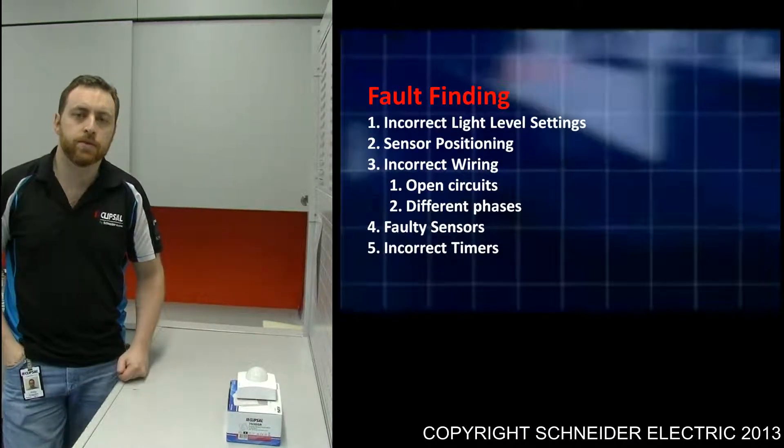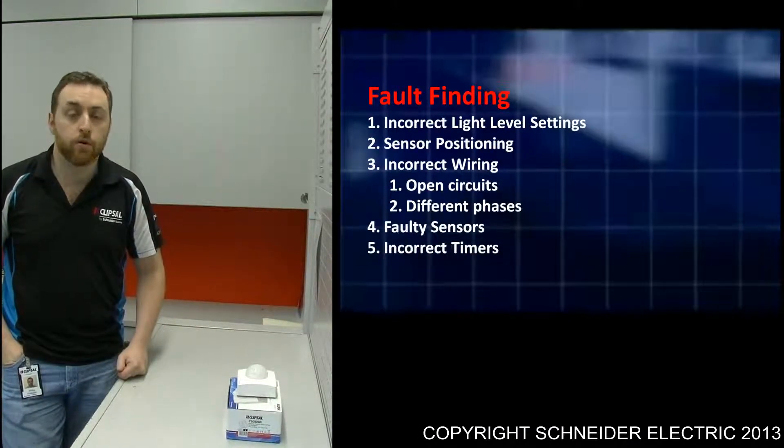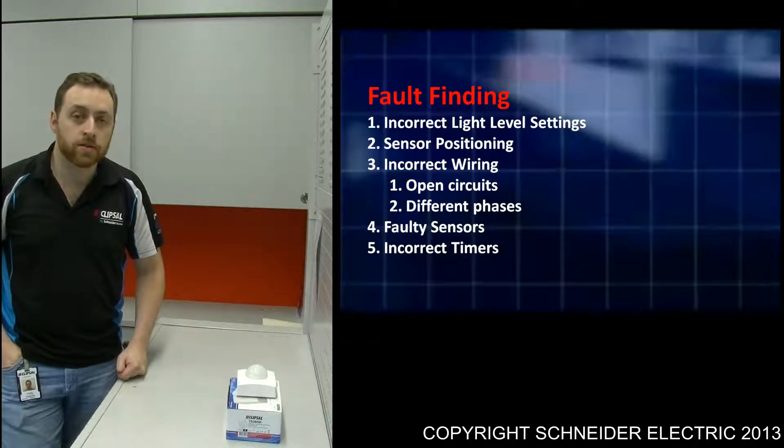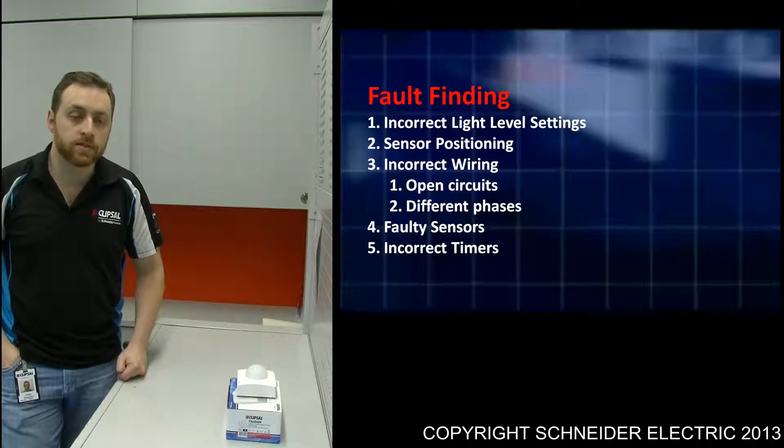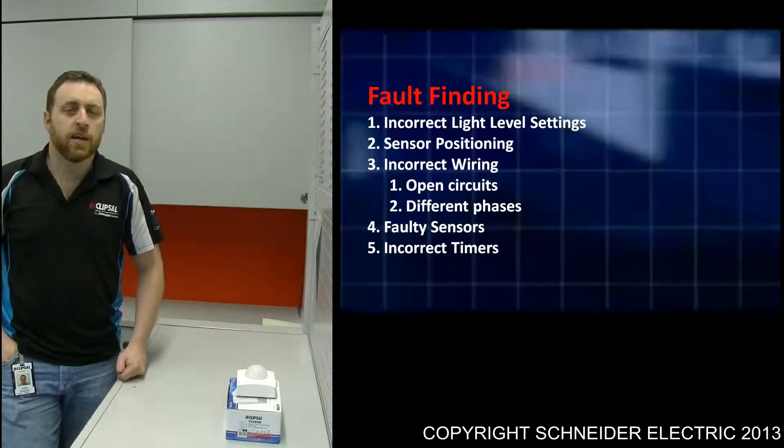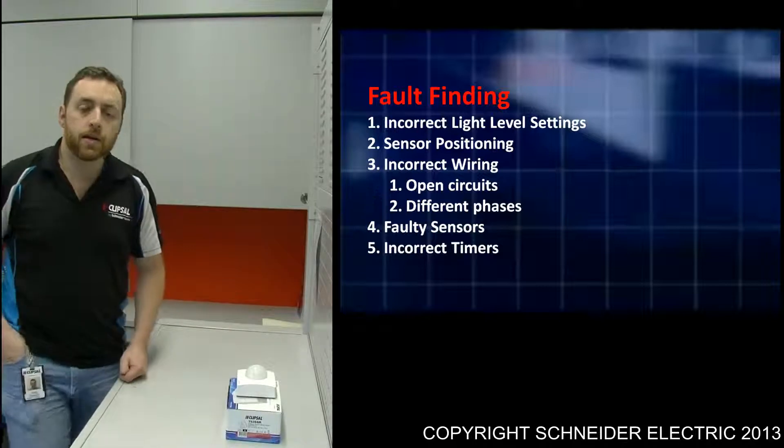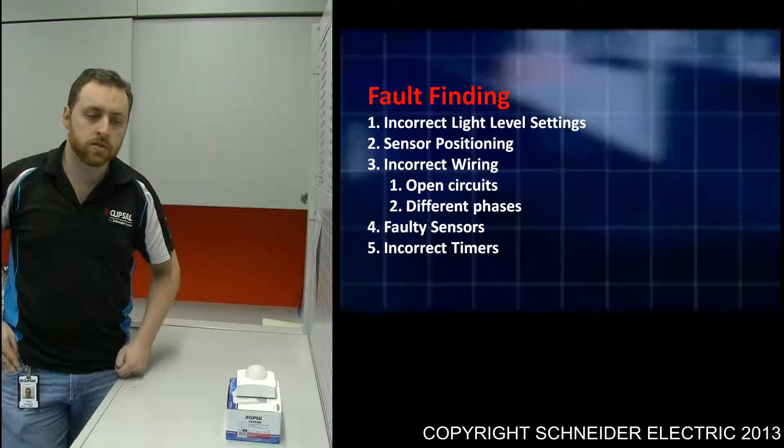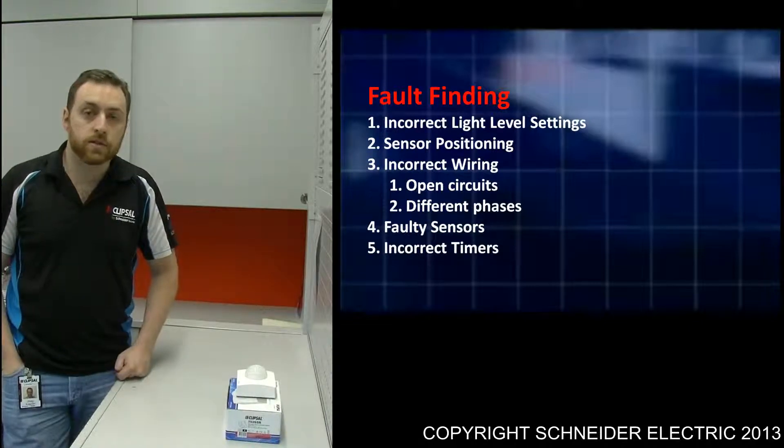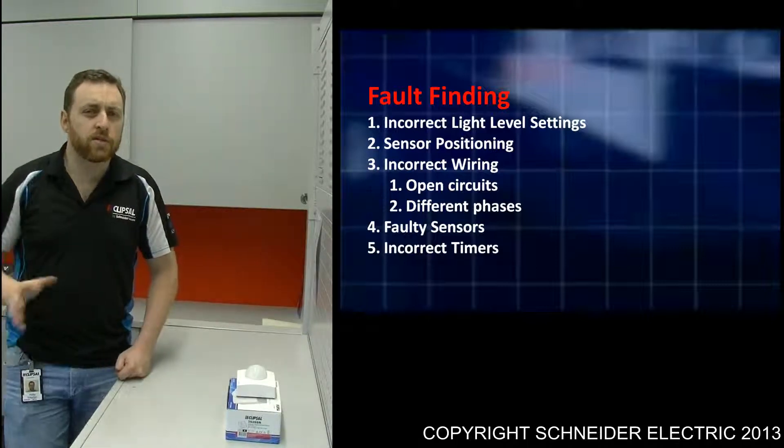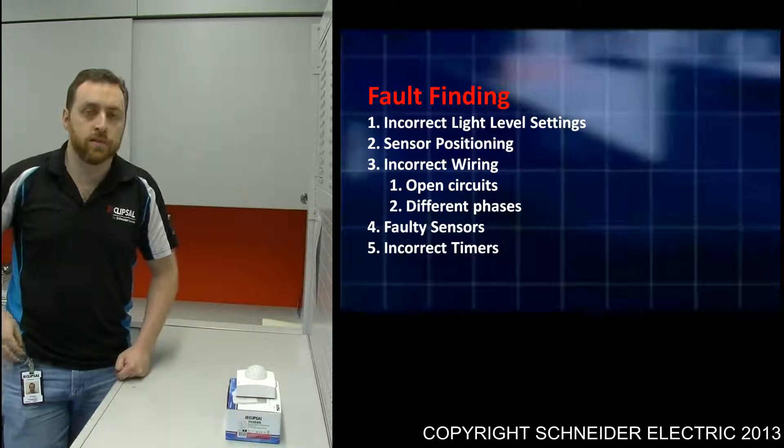If you're experiencing issues on site, some of the more common causes are: incorrect light level settings programmed into the sensor, possibly sensor positioning causing problems, incorrect wiring such as open circuits, connecting multiple sensors controlling one load to separate phases, potentially a faulty sensor, and finally incorrect time settings, which is probably not as common because diagnosing is relatively easy.